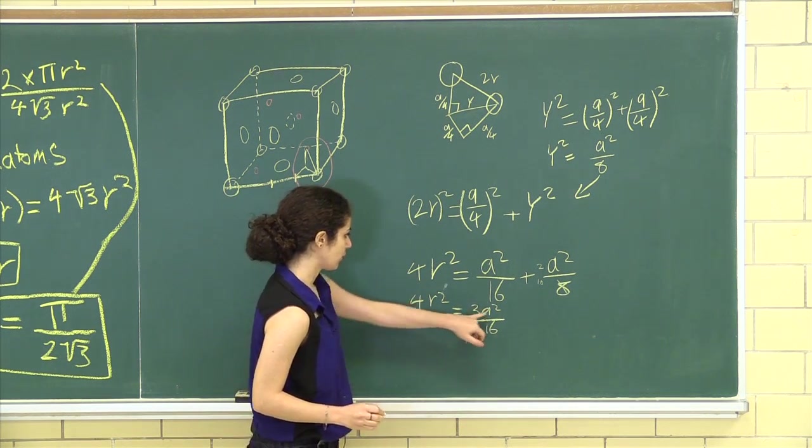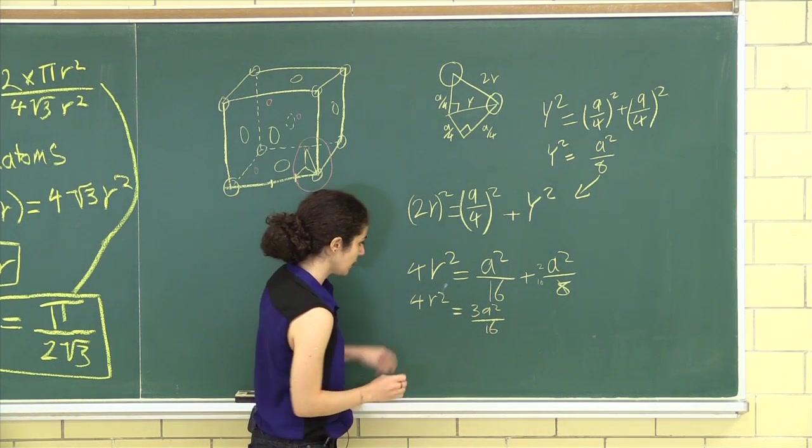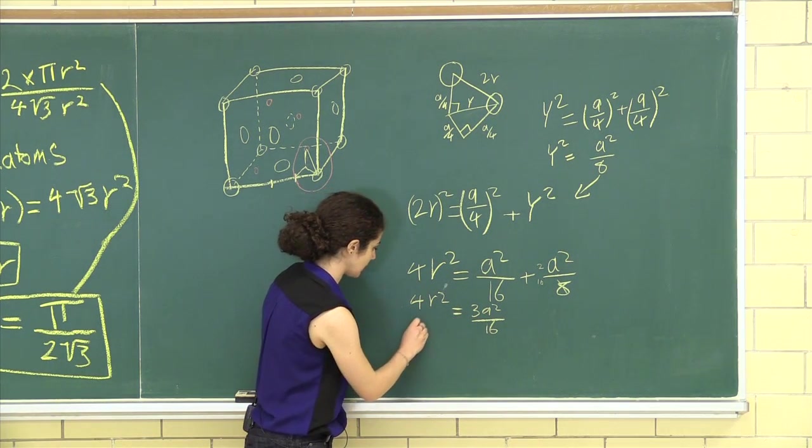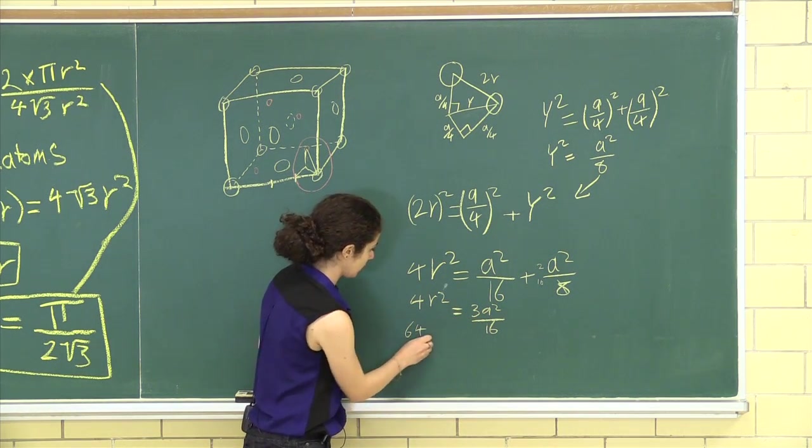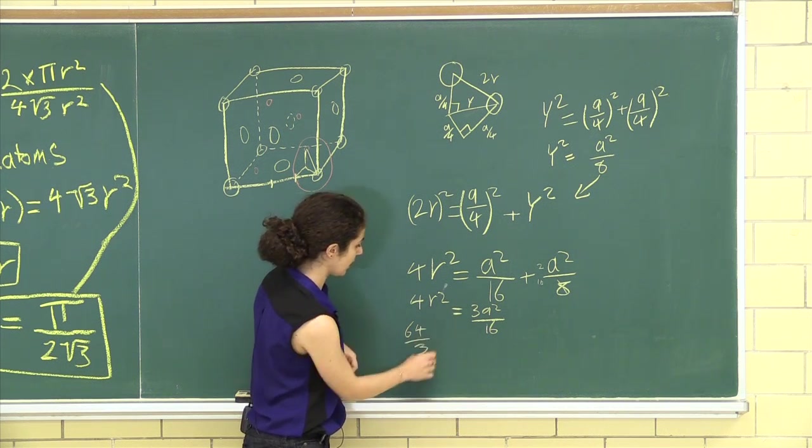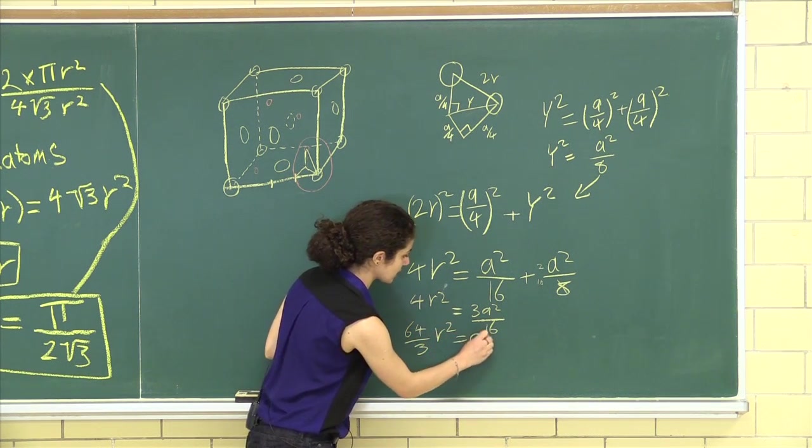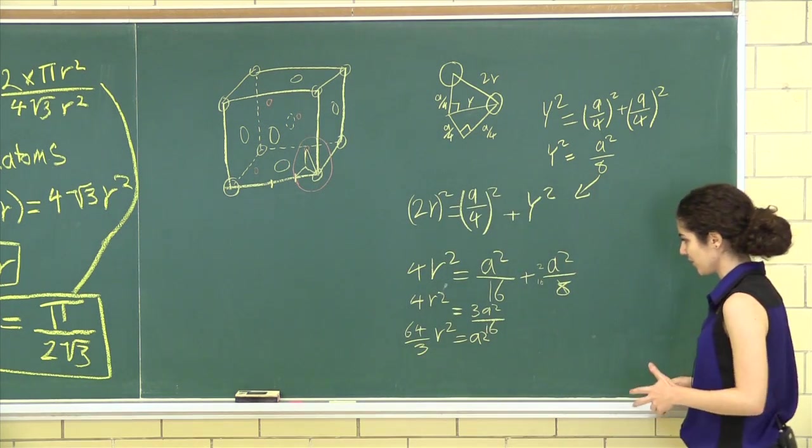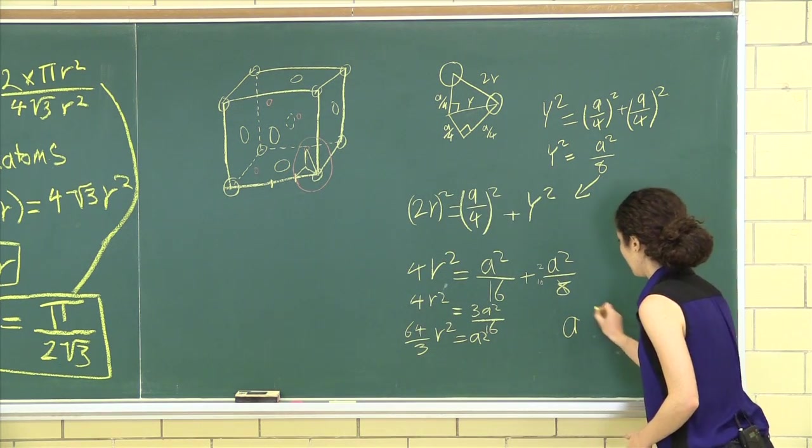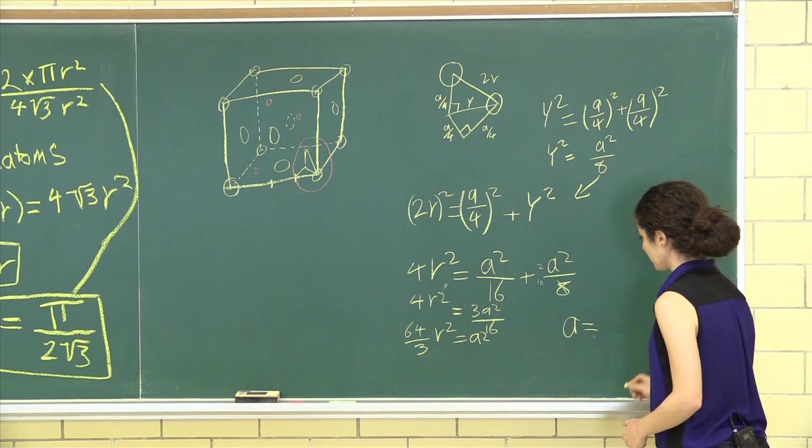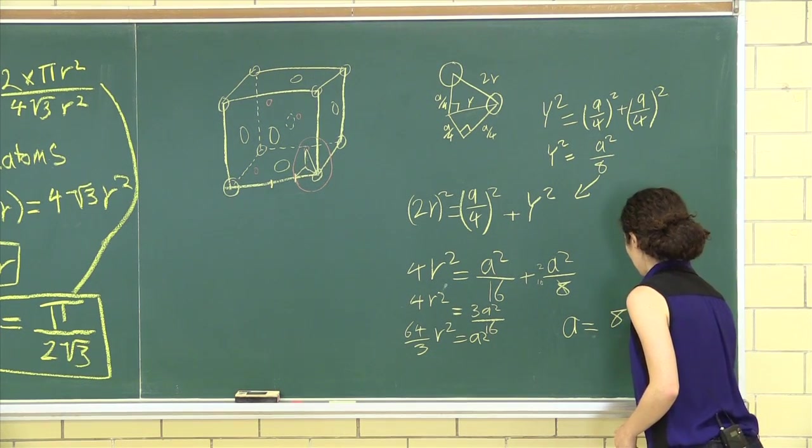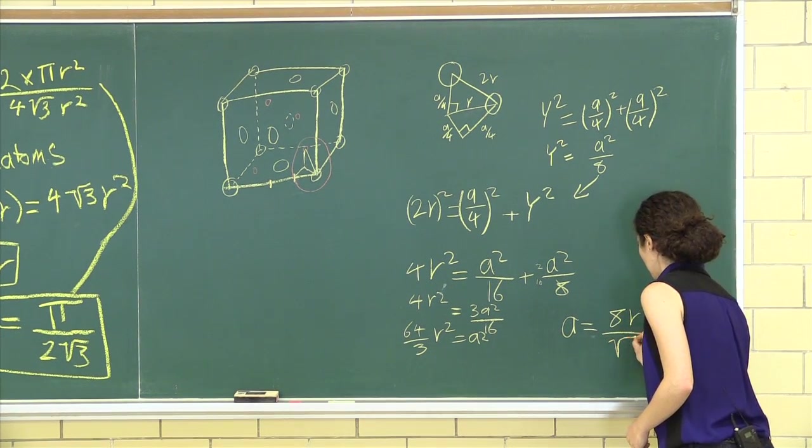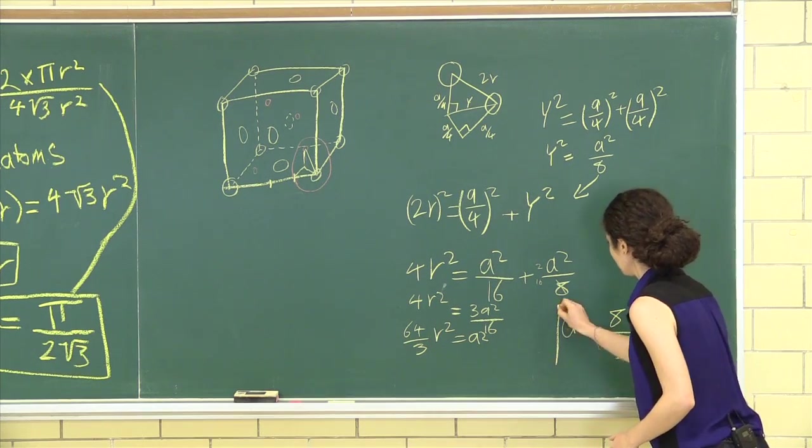Now let's solve for a squared. 16 times 4 is 64. And then divided by 3, r squared is a squared. So our a to r ratio, a is equal to 8r all over root 3.